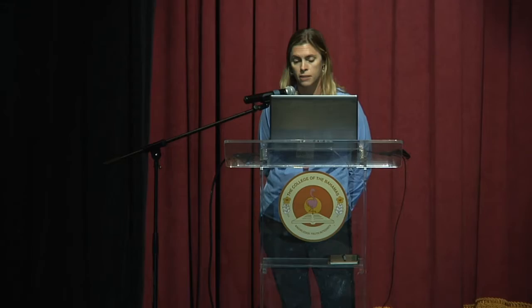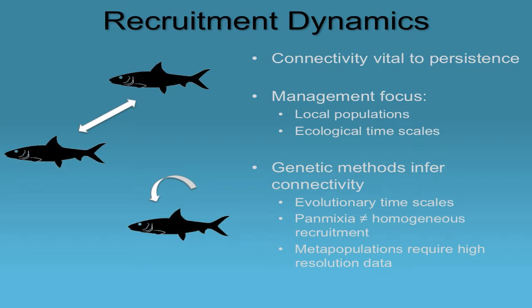In population genetics, we have a term — panmixia — that refers to the instance where you identify a single reproductive unit, which might occur locally or across a region. This has been a pattern that has emerged when population genetic studies have been conducted, especially in marine fisheries. However, identifying a single genetic unit across a region doesn't necessarily mean that recruitment is actually occurring in a homogeneous way. Recruitment can be highly variable in time and space, so what we may often have are really functional metapopulations, where recruitment varies between them. Getting a handle on this requires really high-resolution data.